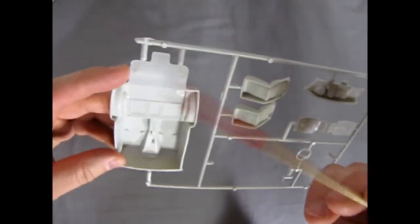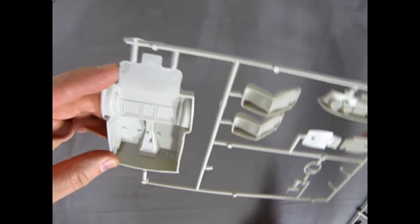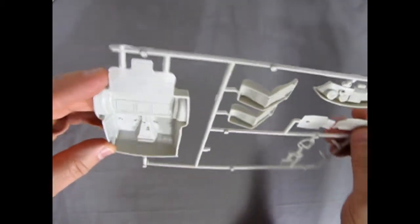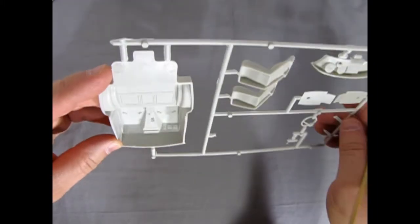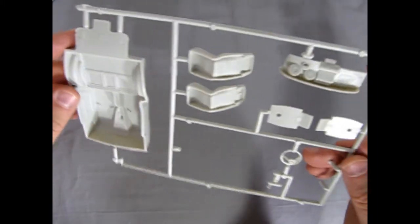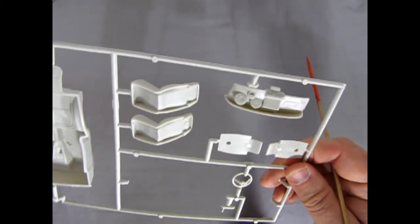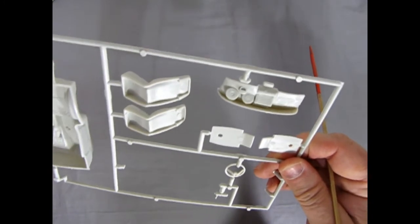So again, a little bit of mold marks along here, where it's going to tab in in the back, so you might want to remove those. Overall though, the mold marks are under the seats and behind, which is nice, so that you don't really need to scrape them, because the seats, of course, will cover all that area.